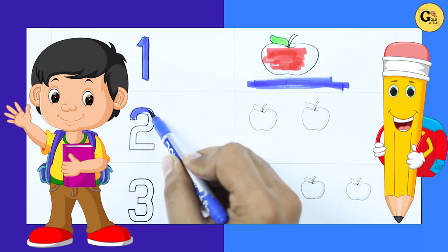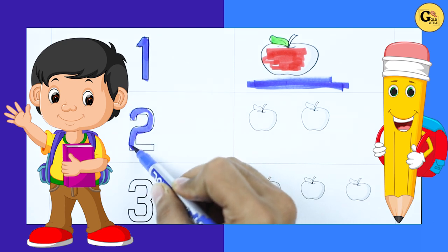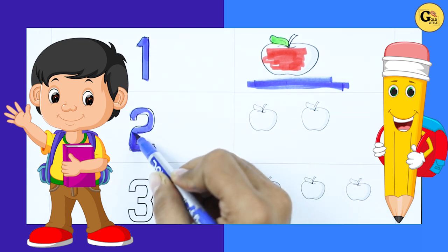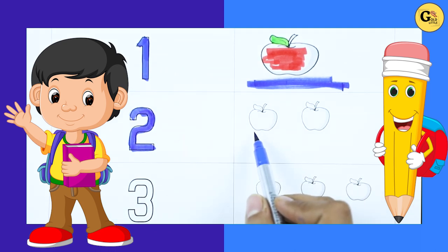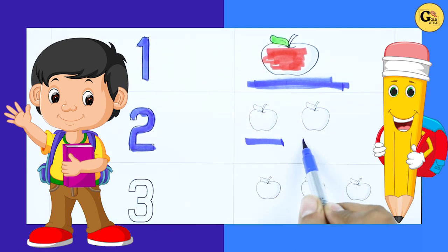Number 2, number 2 with blue color. How many apples here? 1 apple, 2 apples. It's 2 apples.